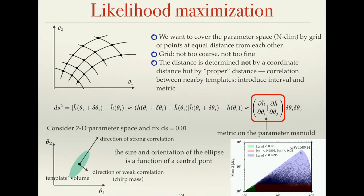Even a small change in chirp mass modifies the gravitational wave signal quite a lot — you can see it by eye. But for instance, another direction could be the spin of the black holes. The gravitational wave signal rather weakly depends on spin, so you need to change it quite significantly to have a noticeably different waveform, where similarity is measured by the inner product correlation.